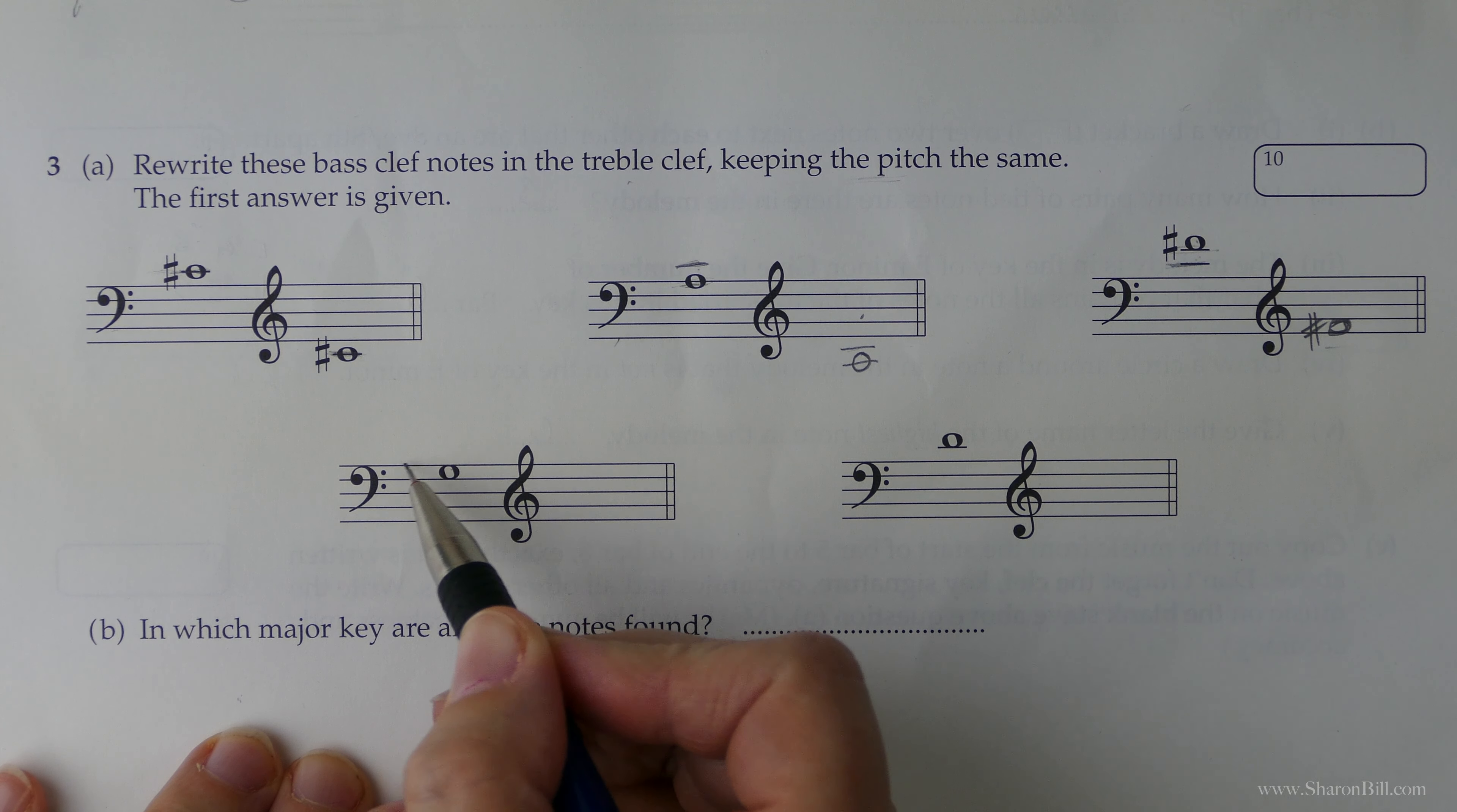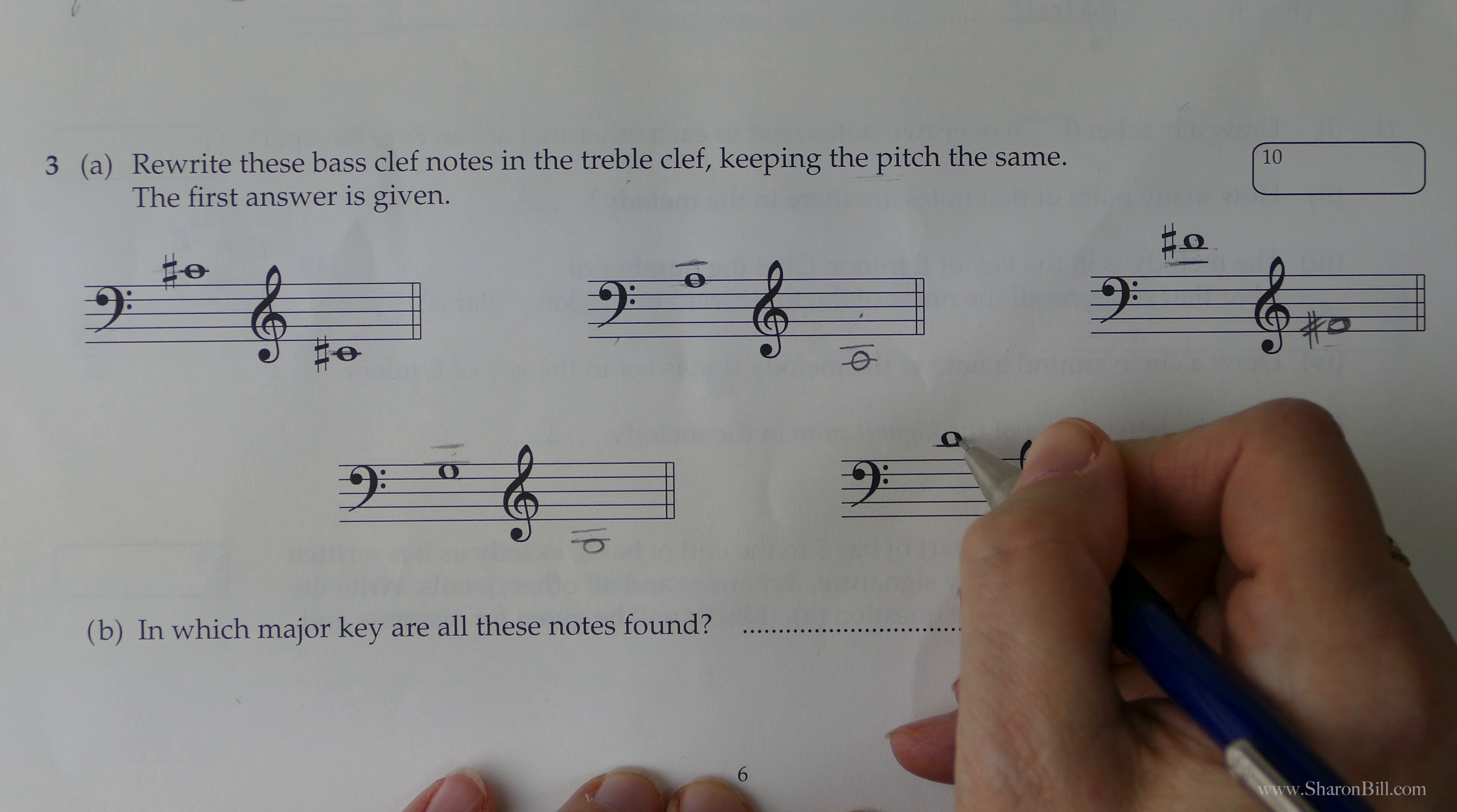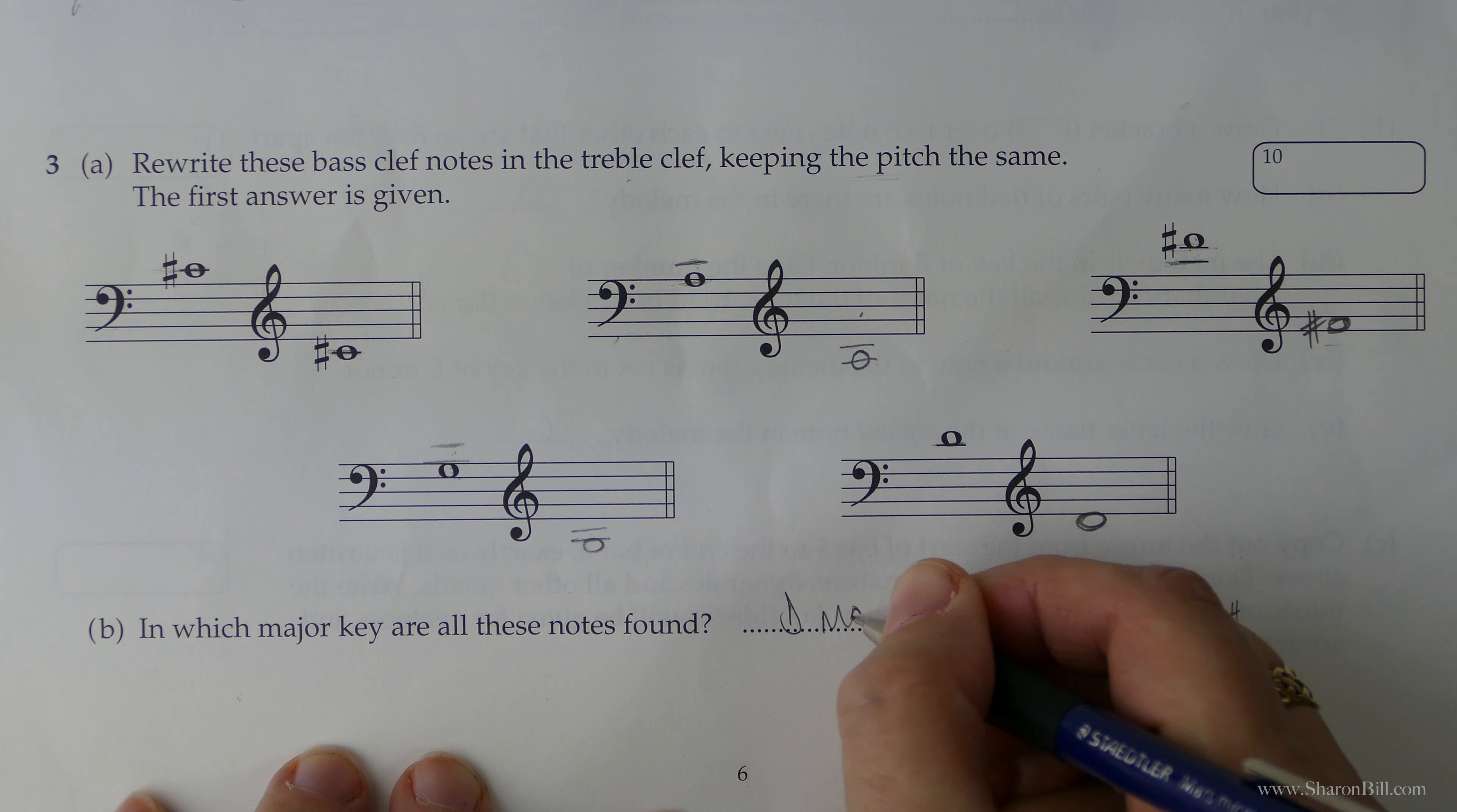Now here we are below middle C so starting in the bass clef middle C is here, C B A G one two three four so below middle C, C B A G. So now here is middle C in the bass clef and we're one step above that so here is middle C in the treble clef just as a reference point, one above that takes us to D here and that's that. So that question's completed apart from question B: in which major key are all these notes found? So we need to just look at what clues we've got, we've got a C sharp here and we've got an F sharp here. So which major key has got F sharps and C sharps? If you've done your revision for your key signatures you will know that that's D major.